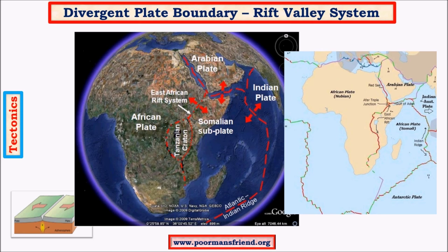This rift system is very important because very important lakes are formed due to the process of rifting, and these lakes supply water to one of the world's most important rivers, the Nile. Water for the Nile comes from mainly two tributaries: Blue Nile and White Nile. White Nile receives water from lakes such as Lake Tanganyika, Lake Albert, Lake Irwin, and others. These lakes supply water to the White Nile tributary. For the Blue Nile tributary, the major water comes from the Ethiopian highlands, which are in this region. These highlands and lakes are very important from a geography and geology perspective.